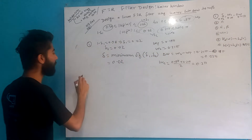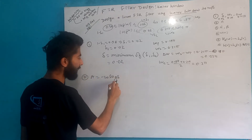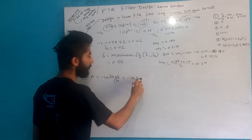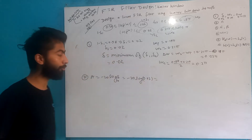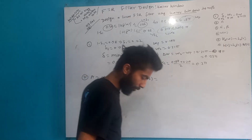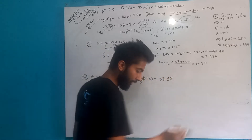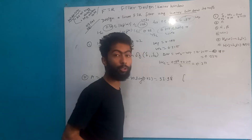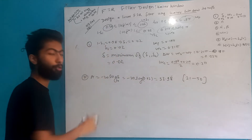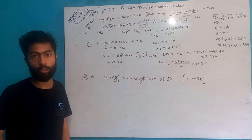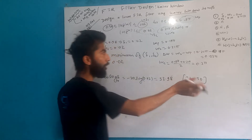Step 2: A equals minus 20 log(delta). So this equals minus 20 log(0.02), which gives A equals 33.98 dB. This value is approximately 33.98.